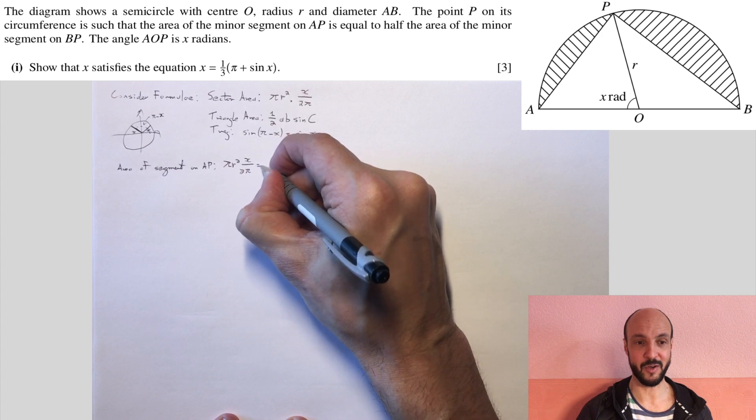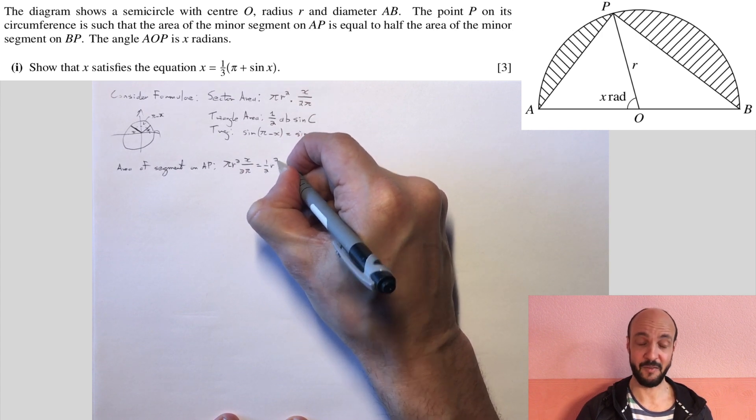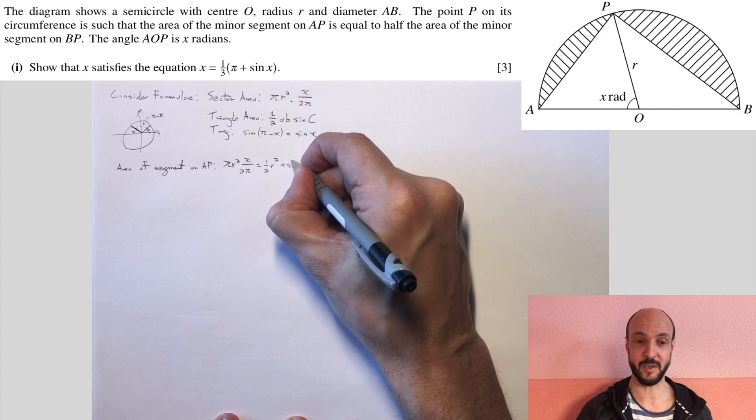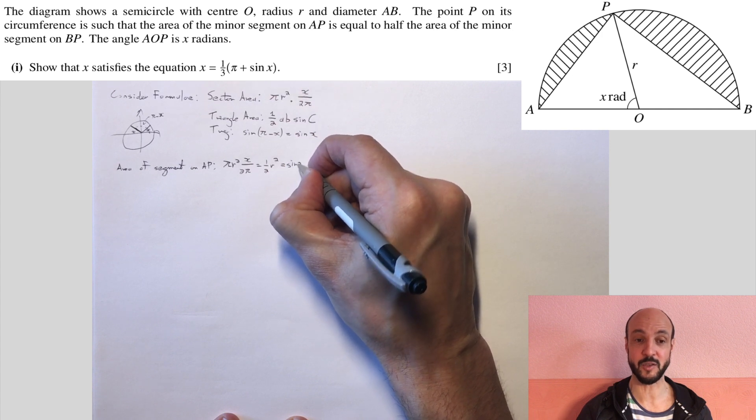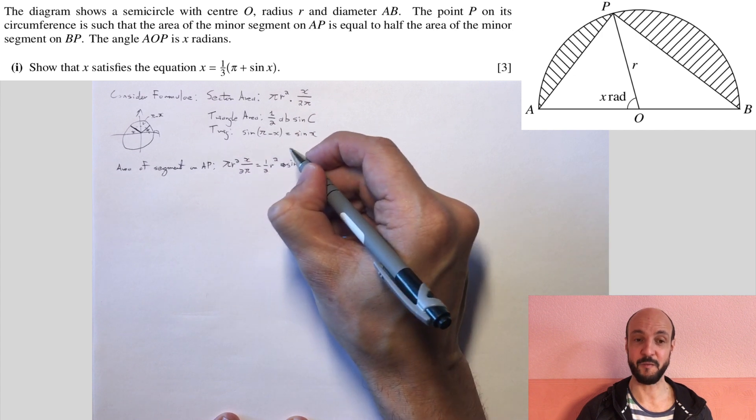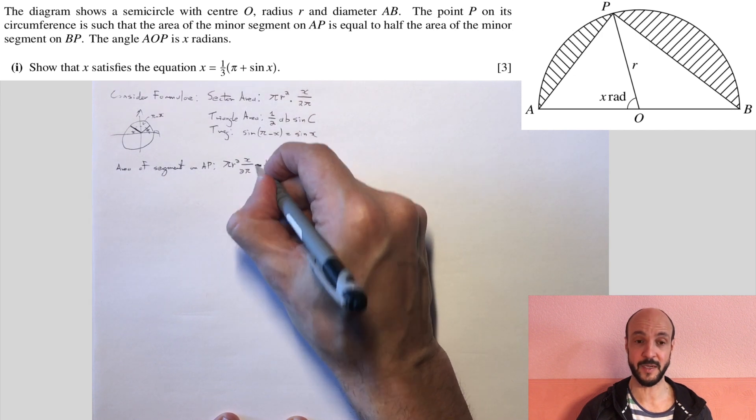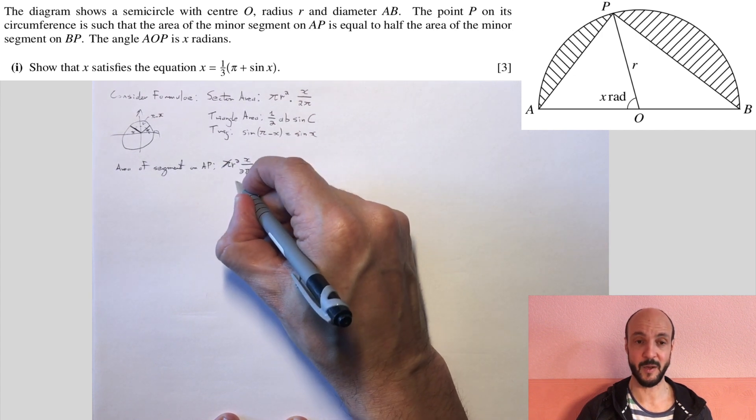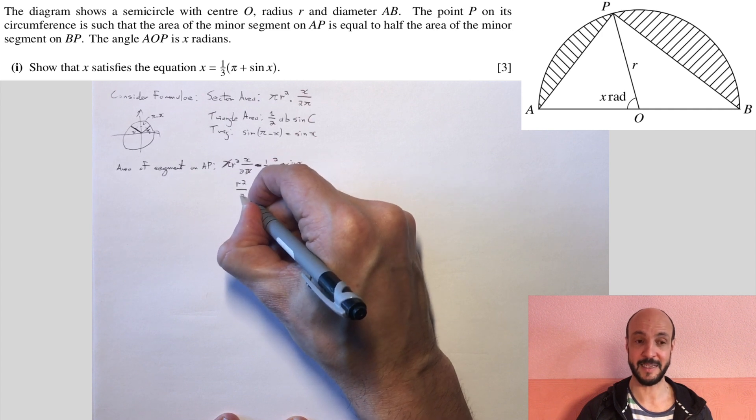And if we just clean that up a little bit, we can see we've got r squared in, well, on the left-hand side, pi's cancel out, leaving us with x r squared over 2 minus r squared over 2 sine x. And then we can factor out our factor of r squared over 2, giving us r squared over 2 times by x minus sine x.